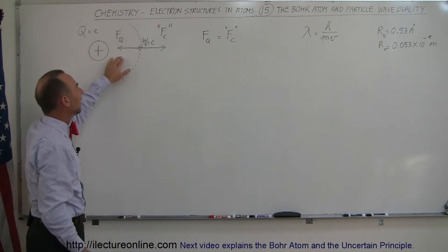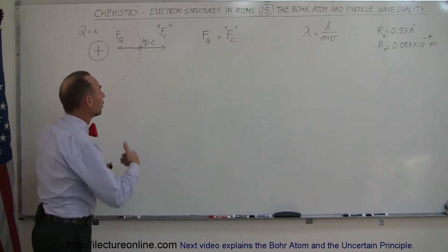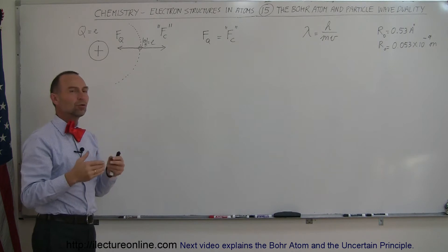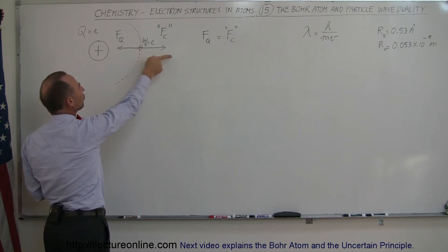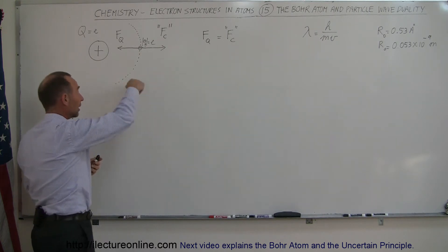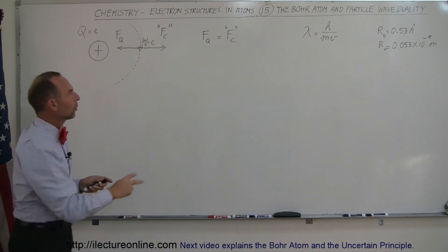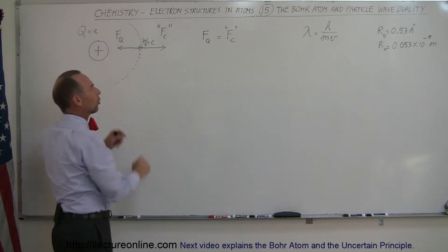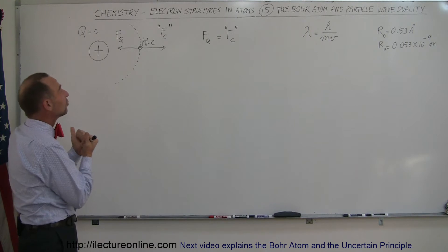Using Coulomb's law, we can say that the force of attraction between the two charges can be found using Coulomb's law. At the same time, we have centripetal force caused by the Coulomb force, and we're going to assume the fictitious centrifugal force, which opposes the Coulomb force. Those two forces have to be equal for the electron to stay in orbit around the nucleus, so we set the two forces equal to each other.